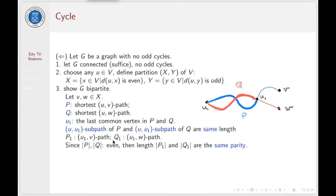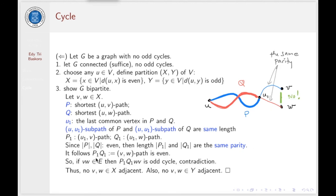Consider the path P1 from U1 to V and Q1 from U1 to W. We can conclude that these two paths must be of the same parity. It follows that P1 Q1 is a path from V to W of even length. If we combine these two paths, we have a path from V to W of even length.